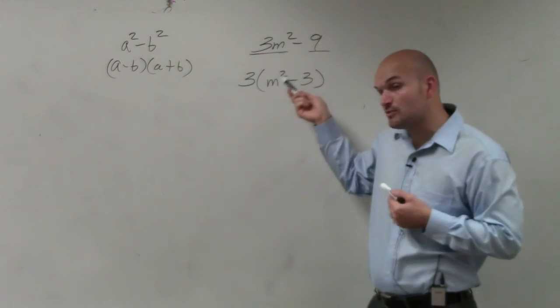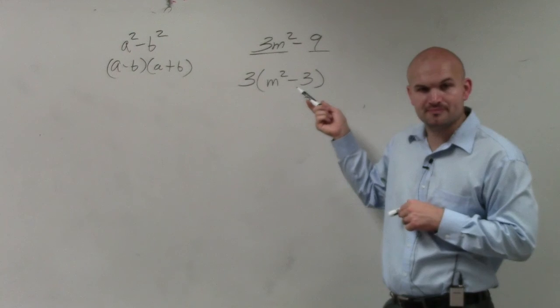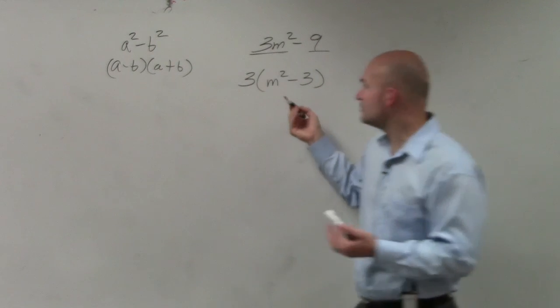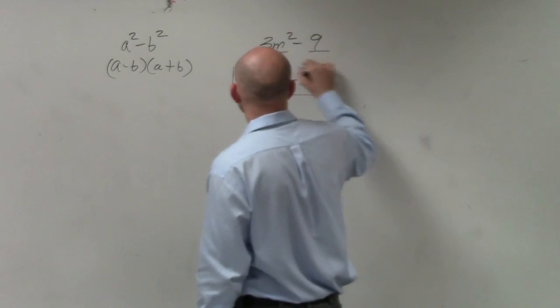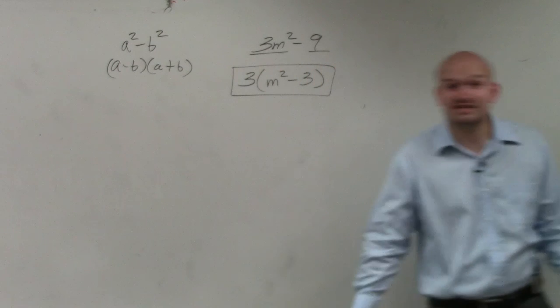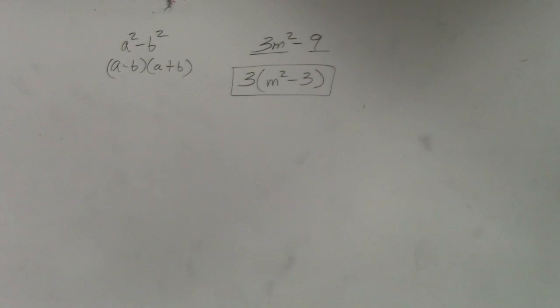However, m squared is squared, but is 3 a square number? No. So we can't do it. So therefore, this is the final factored form. And that's as far as you can go. You can't factor that any further. Thank you, sir.